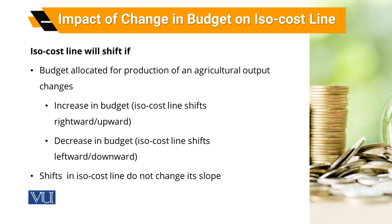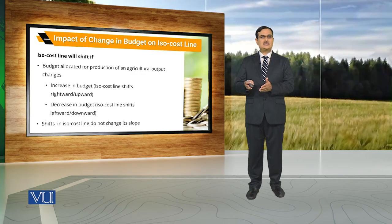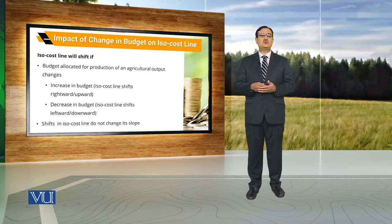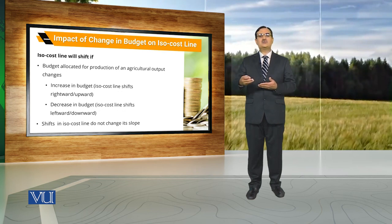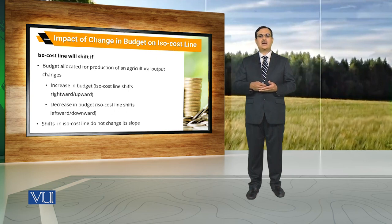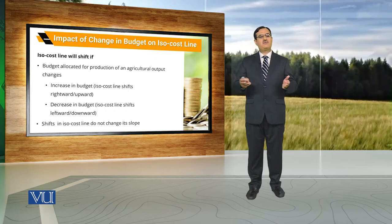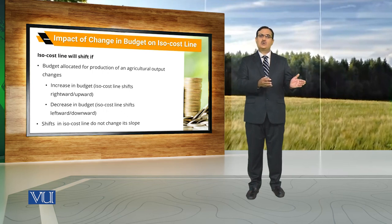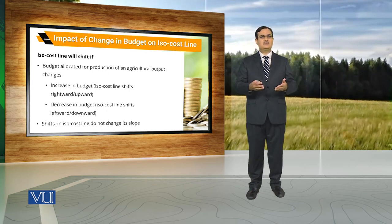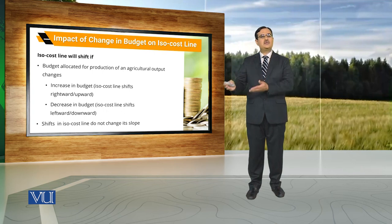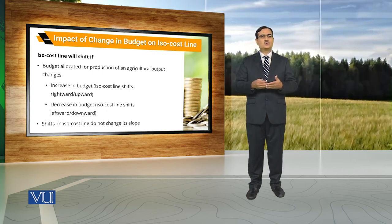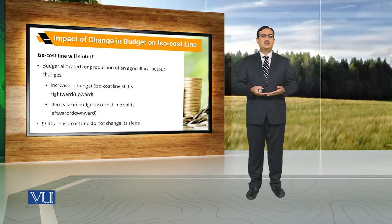اگر allocated amount of resources change ہو — یعنی total amount to purchase the inputs اگر farmer change کرے گا — تو اس کا impact آئے گا ISO cost line پہ۔ اگر amount allocated for the purchase of two inputs increase ہو جائے، then our ISO cost line will shift rightward or upward۔ اور اگر farmer decide کرے کہ وہ کم resources utilize کرے، تو یہ ISO cost line will shift downward۔